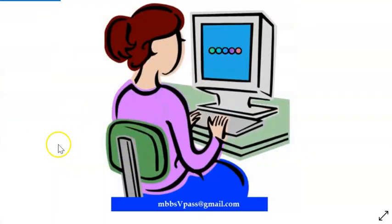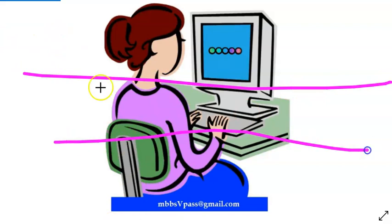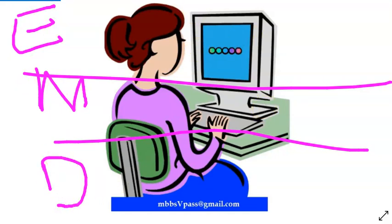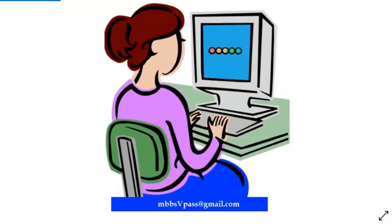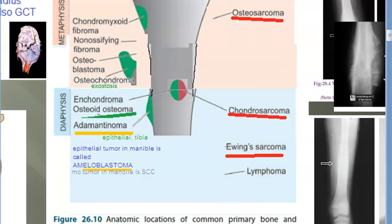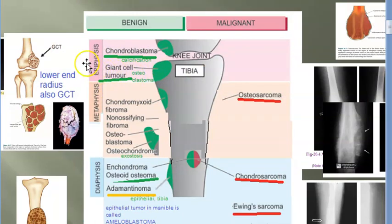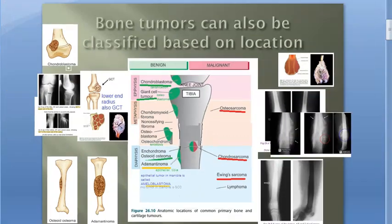To summarize classification by location: you have three parts of the bone — epiphysis, metaphysis, and diaphysis. For the sarcoma group: osteosarcoma is metaphyseal, Ewing's sarcoma and chondrosarcoma are diaphyseal. For benign: giant cell tumor (osteoclastoma) is epiphyseal, osteochondroma (exostosis) is metaphyseal, and osteoid osteoma with adamantinoma are diaphyseal.